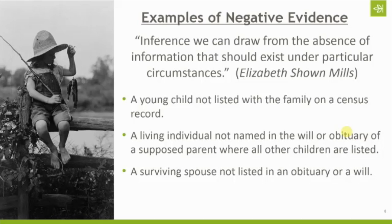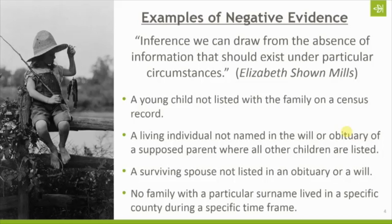Similarly, if you have a surviving spouse who is not listed in an obituary or a will, that could be negative evidence of divorce or a separation. Both people are still living, and you may have evidence of their marriage in multiple places, but if that surviving spouse is not listed in an obituary or a will, that could be negative evidence of divorce or separation. Again — what's not there that you expect to be there.